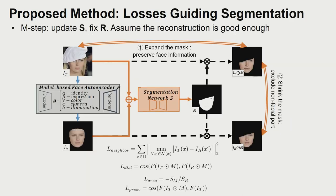To train the segmentation network, we propose four losses enforcing intrinsic similarities among the images, instead of hunting for labeled data. Each loss works to either include pixels indicating faces or exclude the outliers. Good segmentation results can be achieved by reaching a balance among these losses.